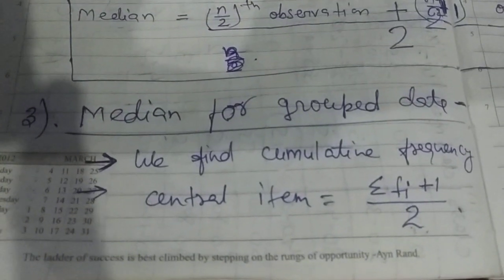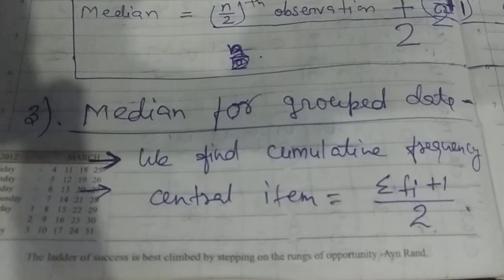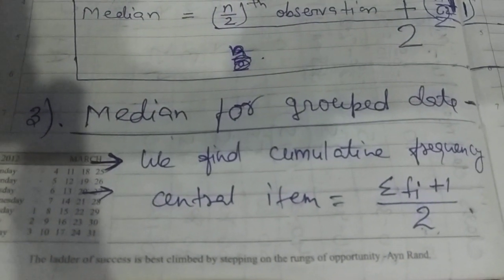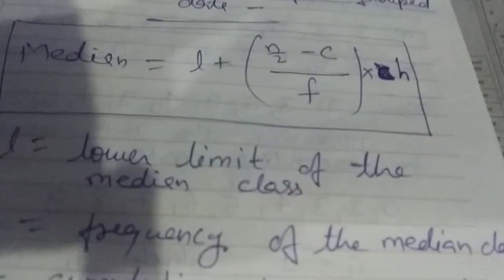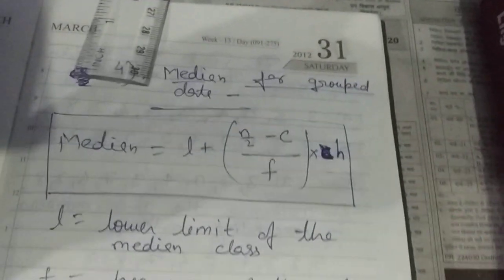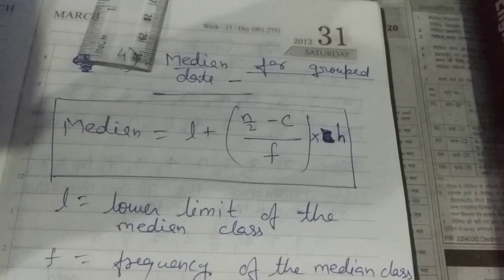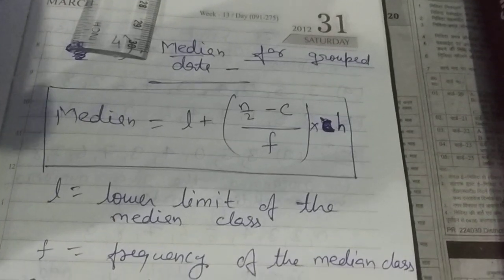For grouped data, the central item is found using the formula: (summation of fi + 1) / 2, and this gives us our median.